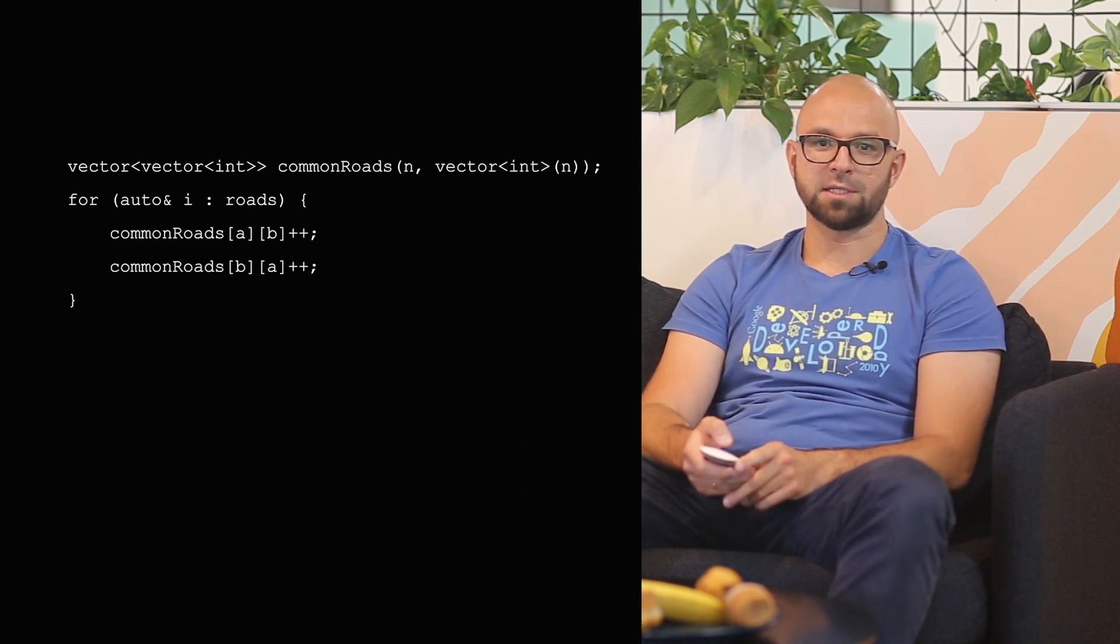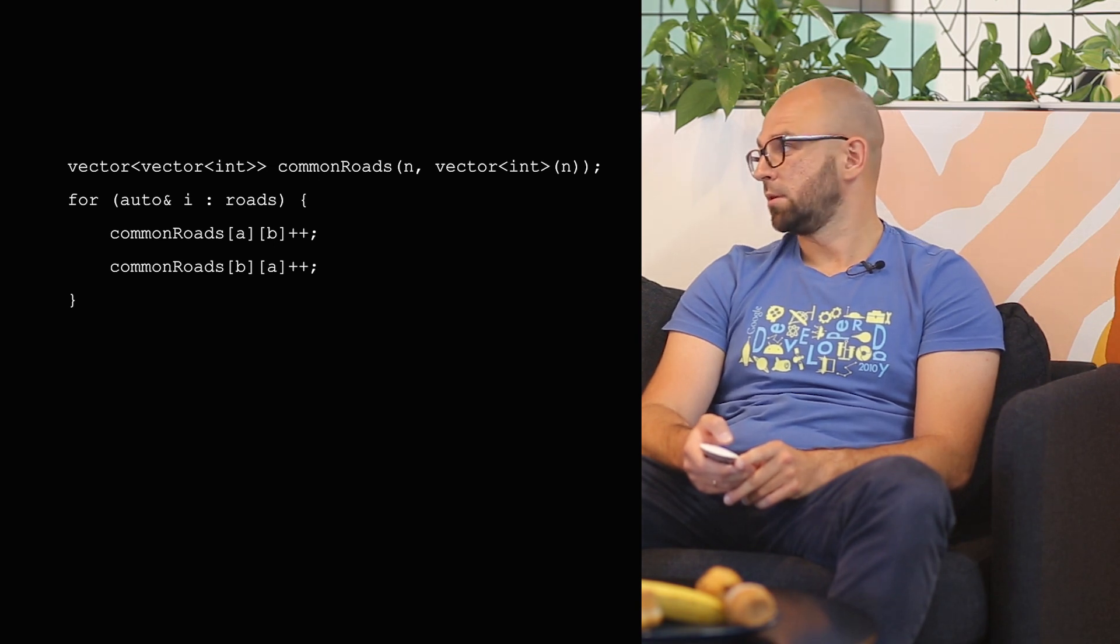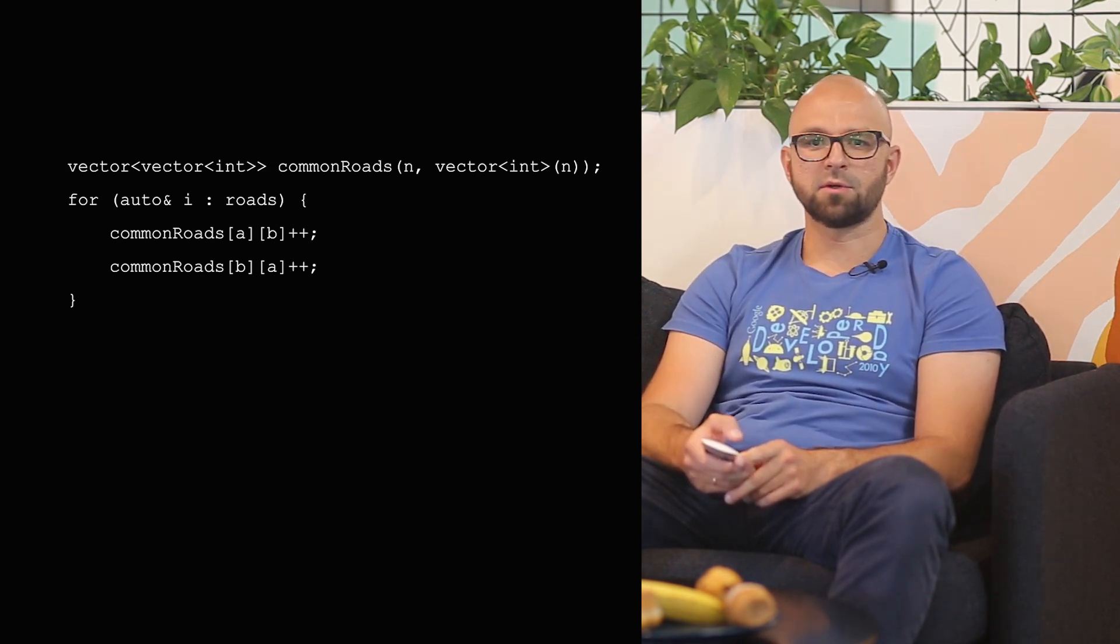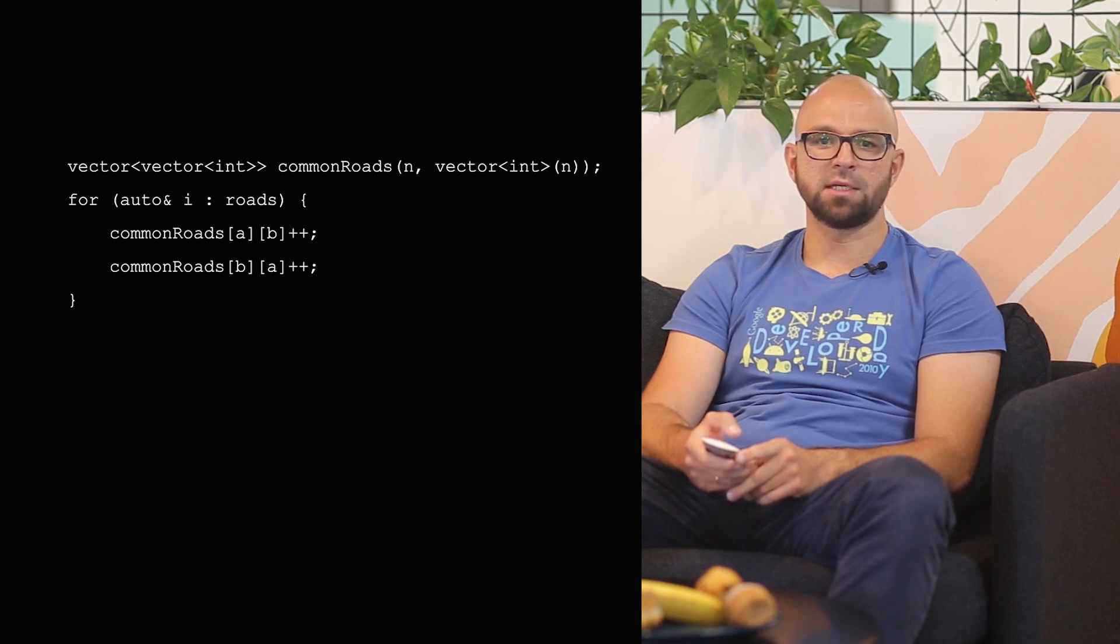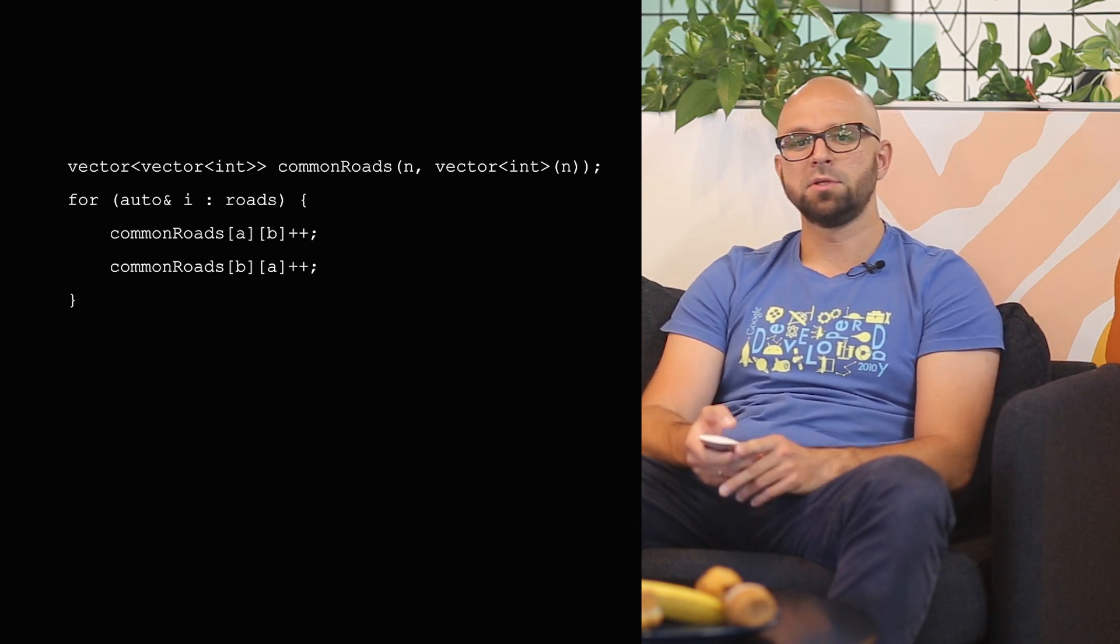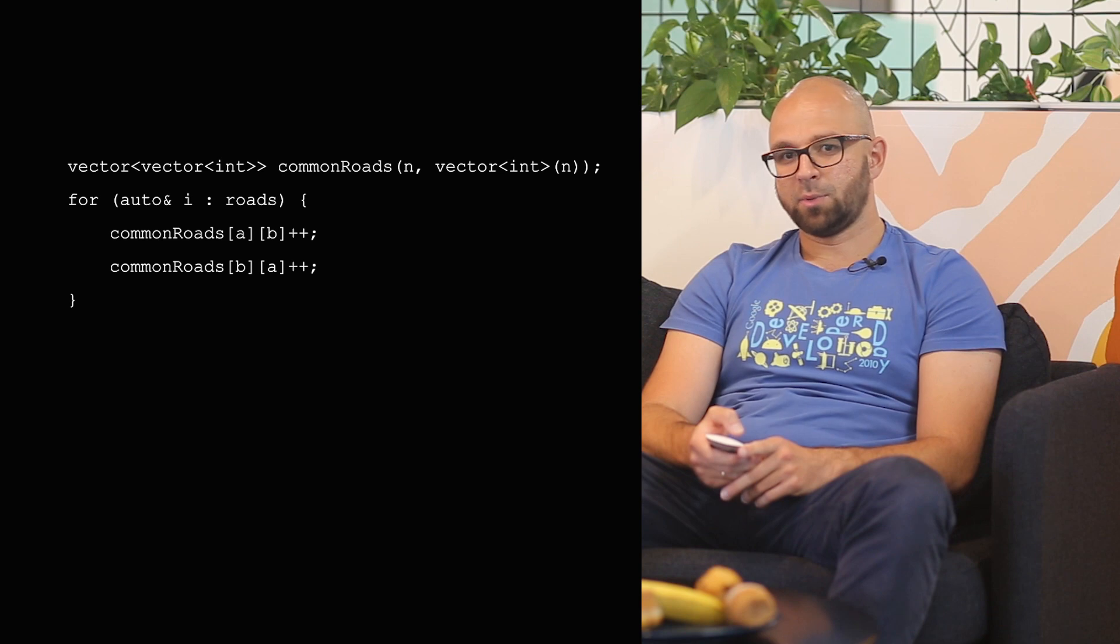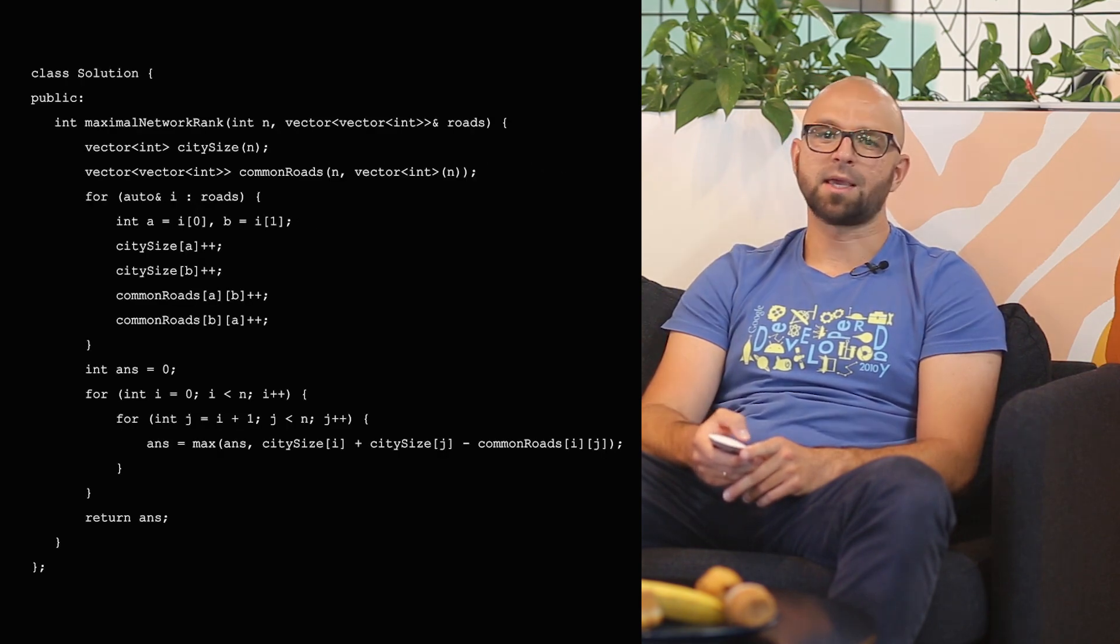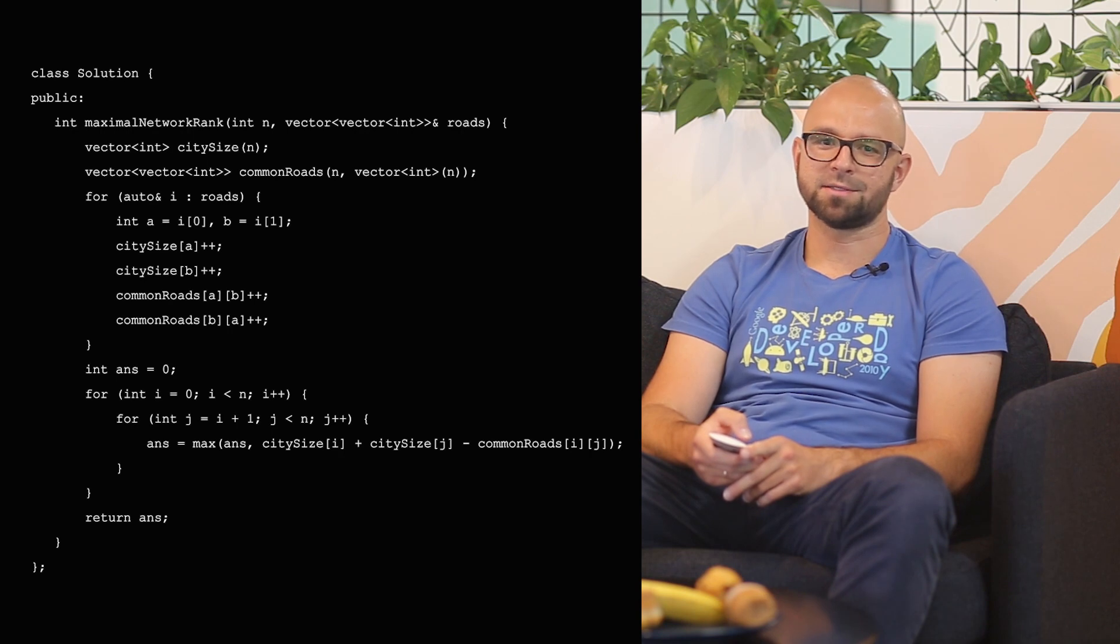Common roads can be calculated in a similar way with the exception that this is a two-dimensional array. Again, common roads stores the number of roads connecting any two cities, and it's a two-dimensional array. Now that we have all the parts of the solution, we can put them together. Take a pause and think of the elegance of this solution.